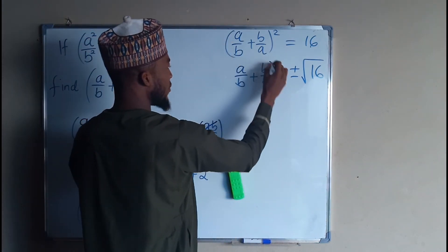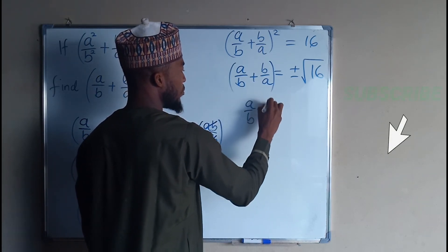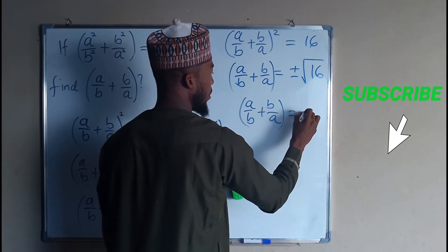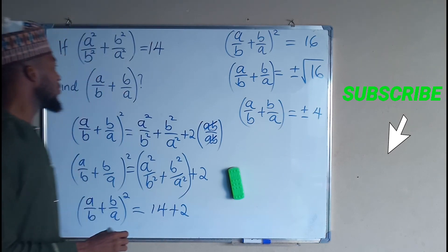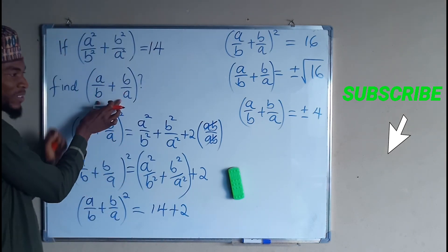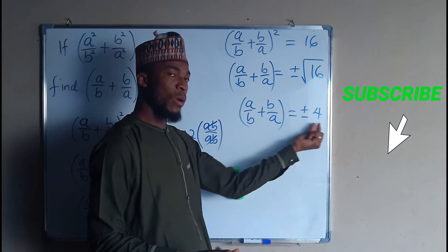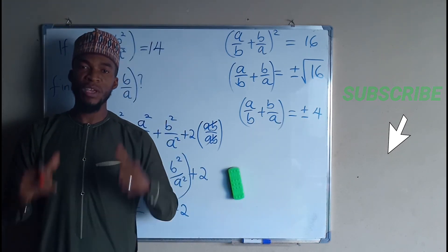So the whole of this quantity here, a/b + b/a, will be equal to plus or minus 4. The real value of this quantity that we are asked to find is either minus 4 or plus 4. If you enjoyed this video, kindly give me a thumbs up.